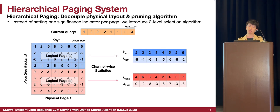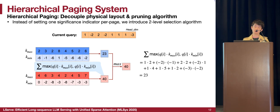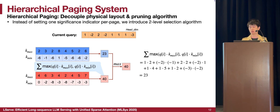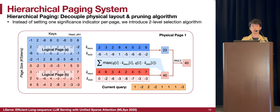Specifically, we define smaller logical pages inside each physical page and compute channel-wide statistics such as kmax and kmin per logical page. In this example, we split the physical page into two logical ones, each with its own statistics as a representative. We multiply the query with kmax and kmin respectively in an element-wise manner, then aggregate under the guidance of the channel-wide maximum to get the importance score of each logical page. In this example, the first logical page has an importance score of 33 and the second has 40. The importance score of the physical page is defined as the maximum of all its logical pages' scores — which is 40 here.